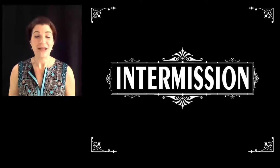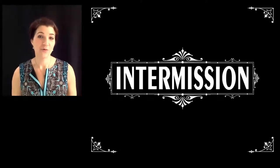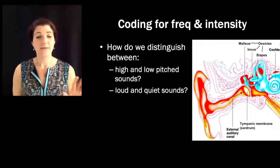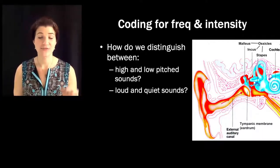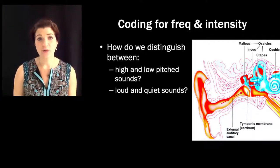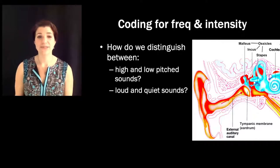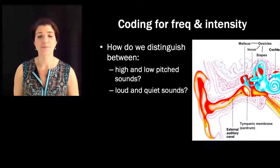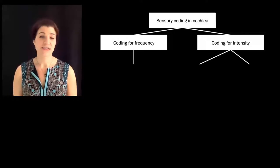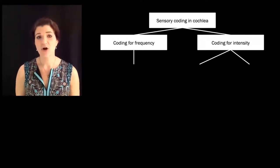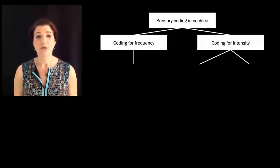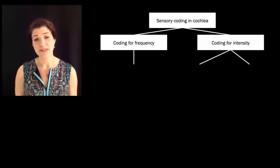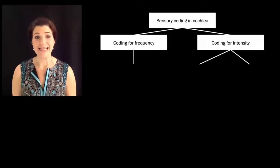We've now talked about how we go from sound waves to action potentials. The missing piece is that we need a way to distinguish between different qualities of sound. How do we code for high-pitched and low-pitched sounds? How do we distinguish between quiet and loud sounds? The auditory system does this in a few different ways — we'll talk about one way that the system codes for frequency and two ways that we code for intensity.